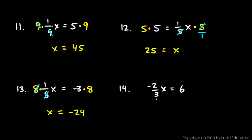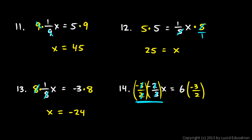Now number 14 is a little bit harder, but the exact same technique applies. Negative 2 thirds times x equals 6. I'm going to get rid of this negative 2 thirds by multiplying by negative 3 over 2 on both sides. On the left, the 3 cancels the 3 in the denominator, the 2 cancels the 2 in the denominator, and the two negative signs multiplied together cancel out — that's negative 1 times negative 1, which is positive 1. This is a number multiplied by its reciprocal, which equals 1, leaving x on the left. On the right, 6 times negative 3 over 2: 6 times negative 3 is negative 18 over 2, and negative 18 divided by 2 is negative 9.